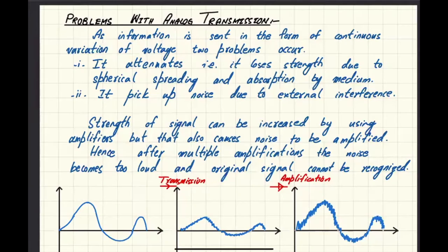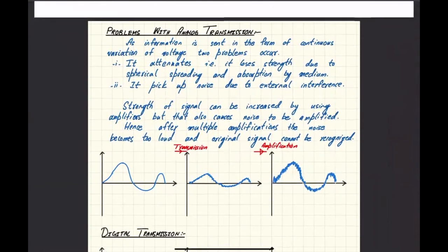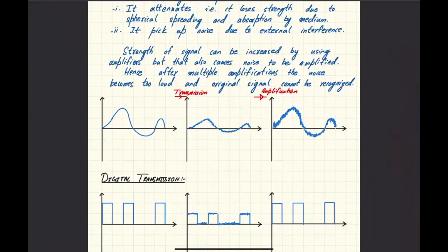The first thing you need to understand is that there are two ways by which transmission can be made. One is analog transmission, which is the continuous variation of voltage. And the other one is digital transmission, which is a series of high and low pulses.